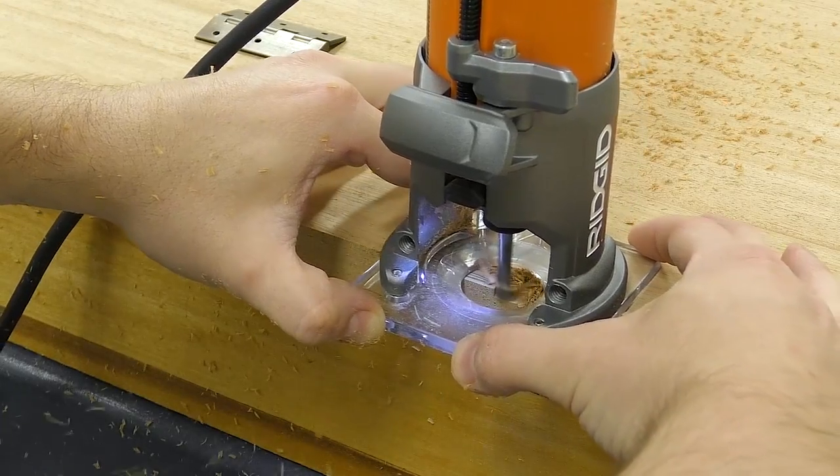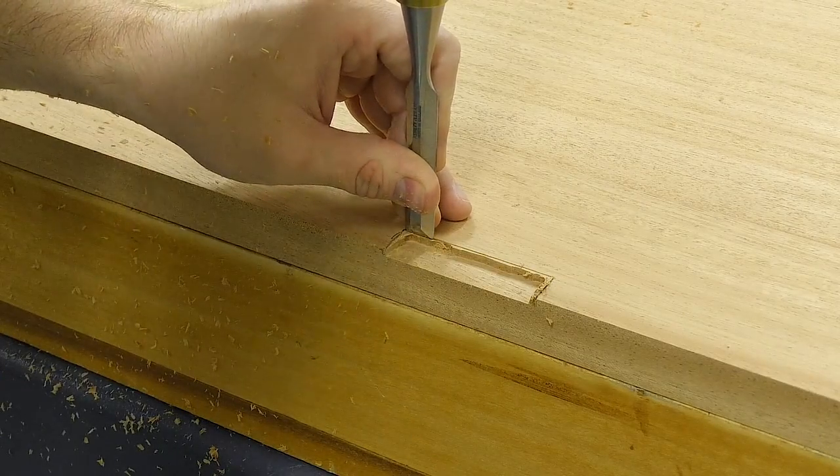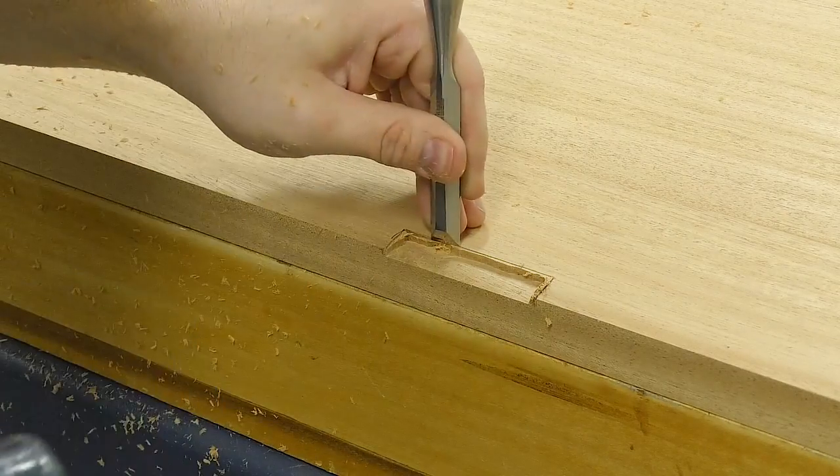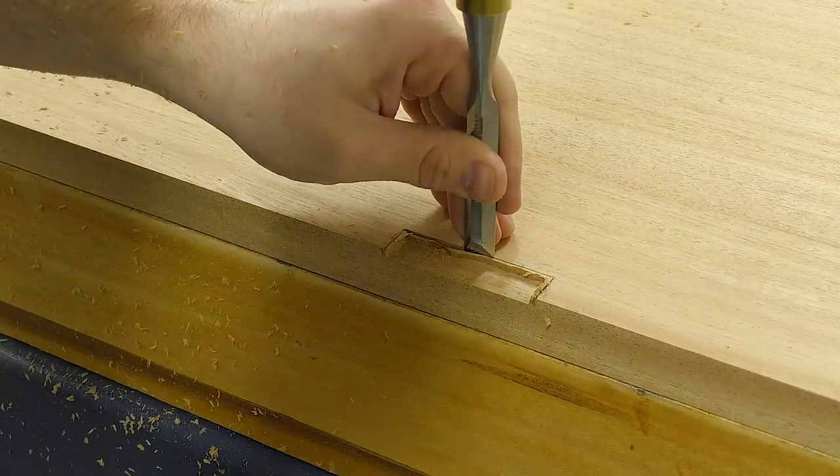When routing out material like this, it's important to stay about an eighth inch away from your line. Next I switched over to using my chisel and removed the waste. Since there was very little waste, I just stuck the chisel in the scribe line and removed it.